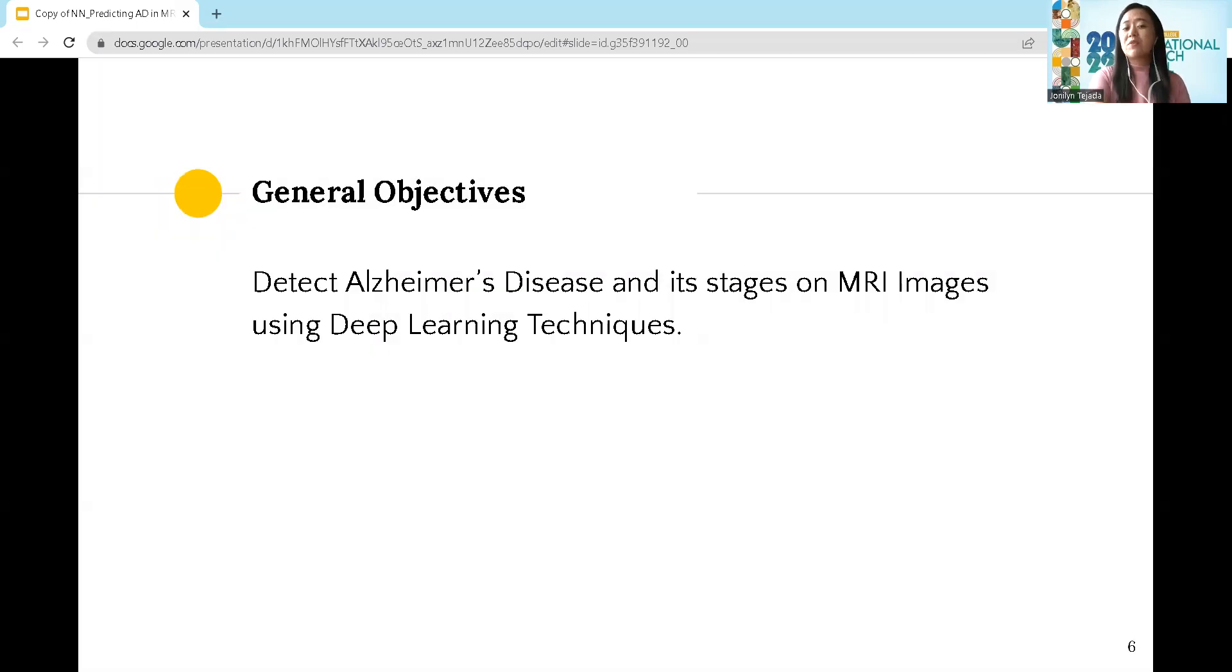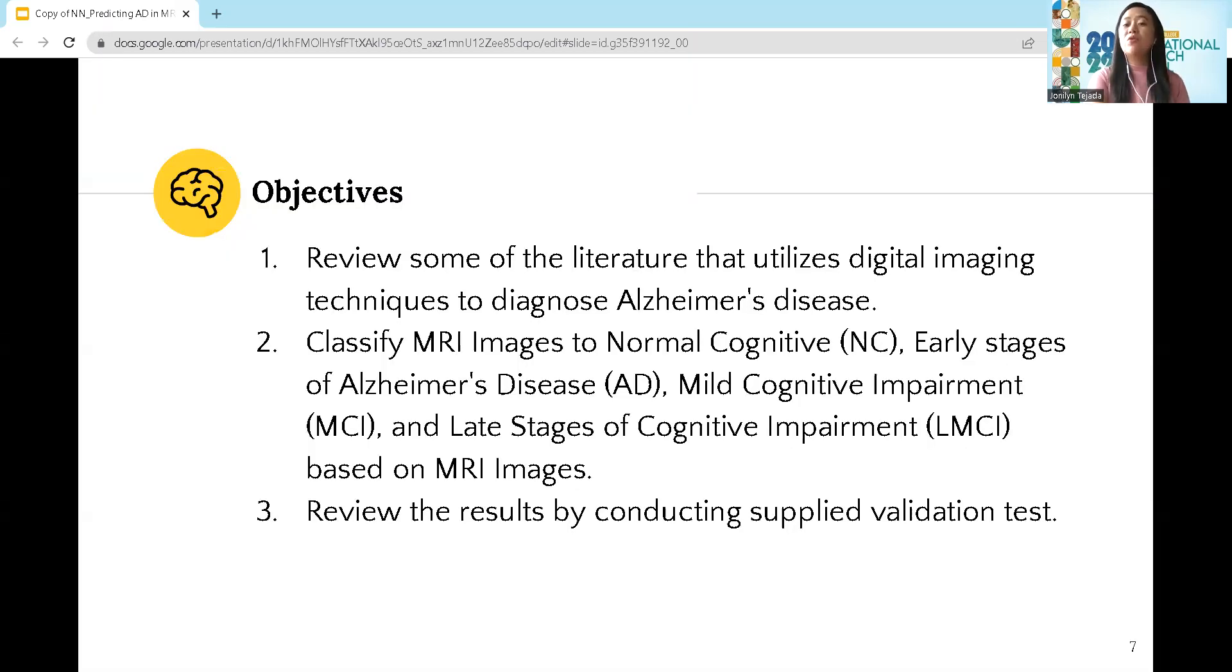For the general purpose of this study, we are going to detect Alzheimer's disease and its stages on MRI images using deep learning techniques. Particularly, we will review literatures that utilize digital imaging techniques, implement deep learning to identify normal cognitive scans (NC), early stages of Alzheimer's disease (AD), mild cognitive impairment (MCI), and late stages of cognitive impairment (LMCI) based on MRI images and review the results.